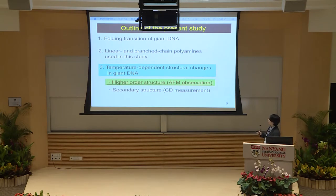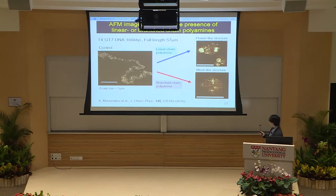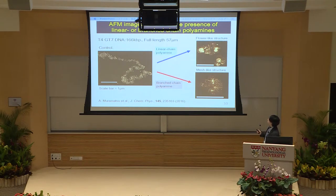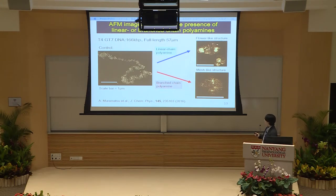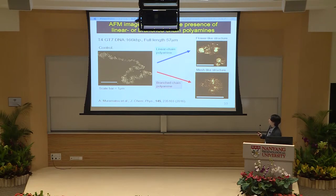Next, I will show you the results of atomic force microscopic observation. As you can see in the typical AFM images in the presence of linear or branched-chain polyamines: with addition of a linear-chain polyamine, a multiple-looped flower-like structure appears on the two-dimensional surface. On the other hand, branched-chain polyamines tend to form a mesh-like structure on DNA. These results clearly show the different effect of linear and branched-chain polyamines on the overall morphology of large DNA.